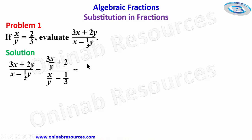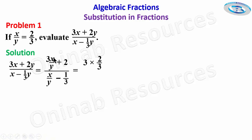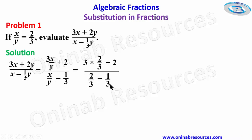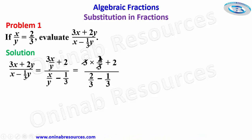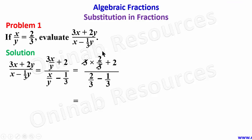So we now have 3 times 2 over 3, since 3 times x over y is the same as 3 times y over 3. Then plus 2. This 3 will cancel this 3, and we'll be left with 2. We then have 2 plus 2 to give us 4.